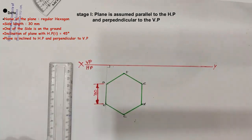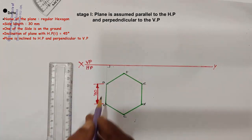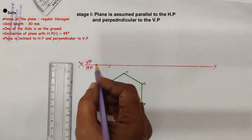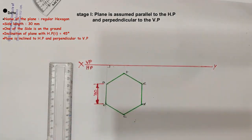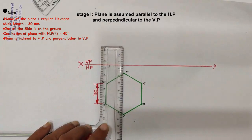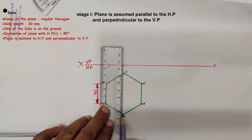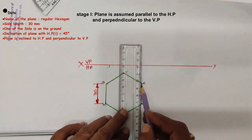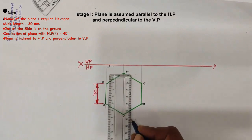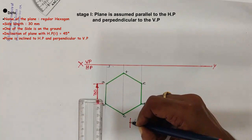Then we will draw the front view of the hexagonal plane. The front view falls on the vertical plane. For drawing the front view, we draw projectors passing through the corners A, B, C, D, E, and F of the hexagonal plane towards the vertical plane. The top view is drawn with H pencil whereas the projectors are drawn with 2H pencil at 25% darkness. This indicates the direction of the front view.